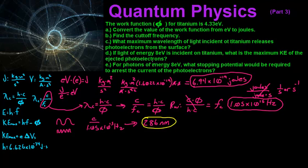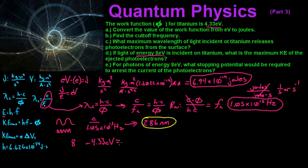For part D: if light of energy 8 electron volts is incident on titanium, what is the maximum kinetic energy of the ejected photoelectrons? The equation is KE max equals H times the frequency minus the work function. The work function is 4.33 electron volts. Since energy E equals H times frequency, we take 8 electron volts minus 4.33 electron volts and end up with 3.67 electron volts.